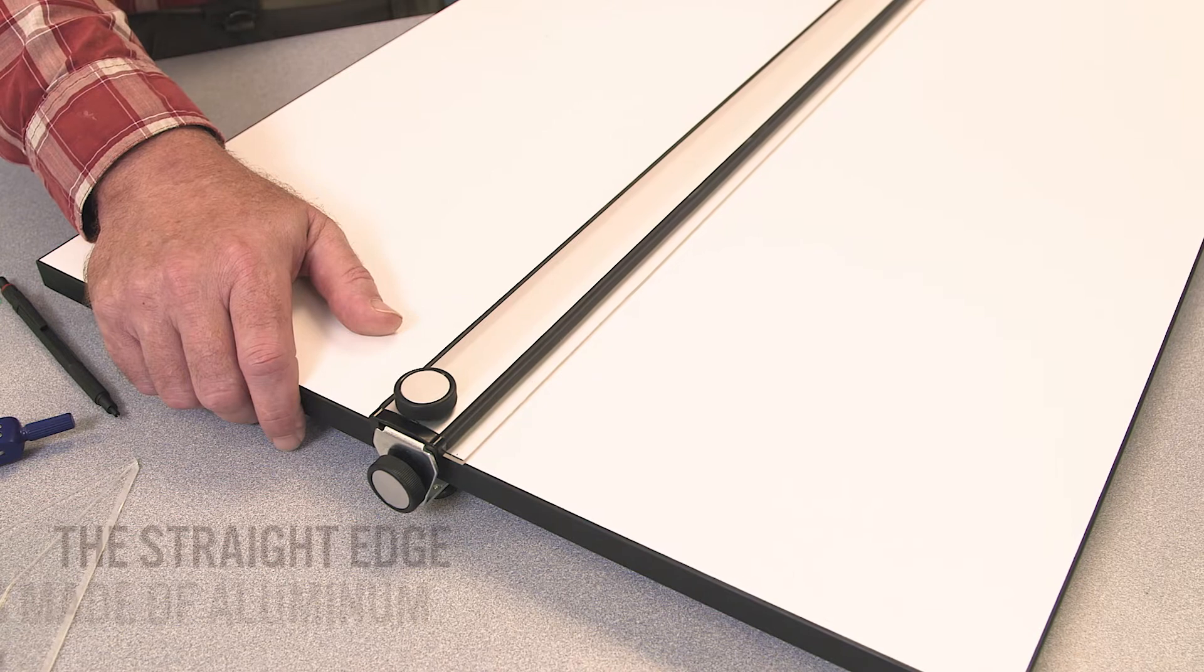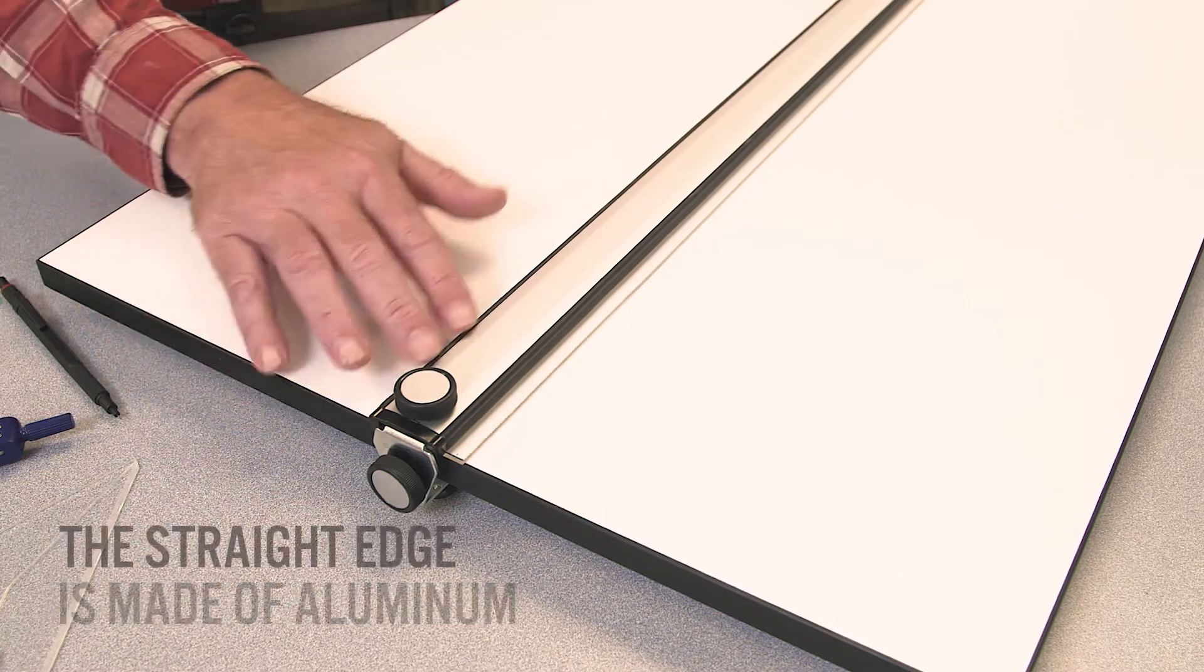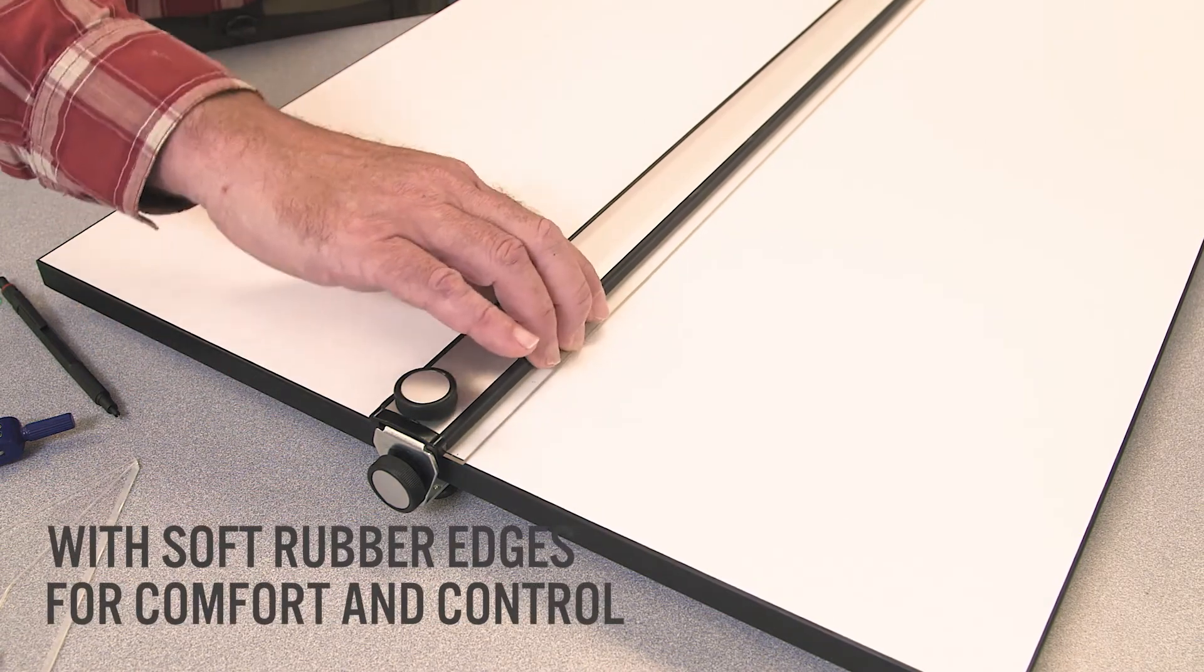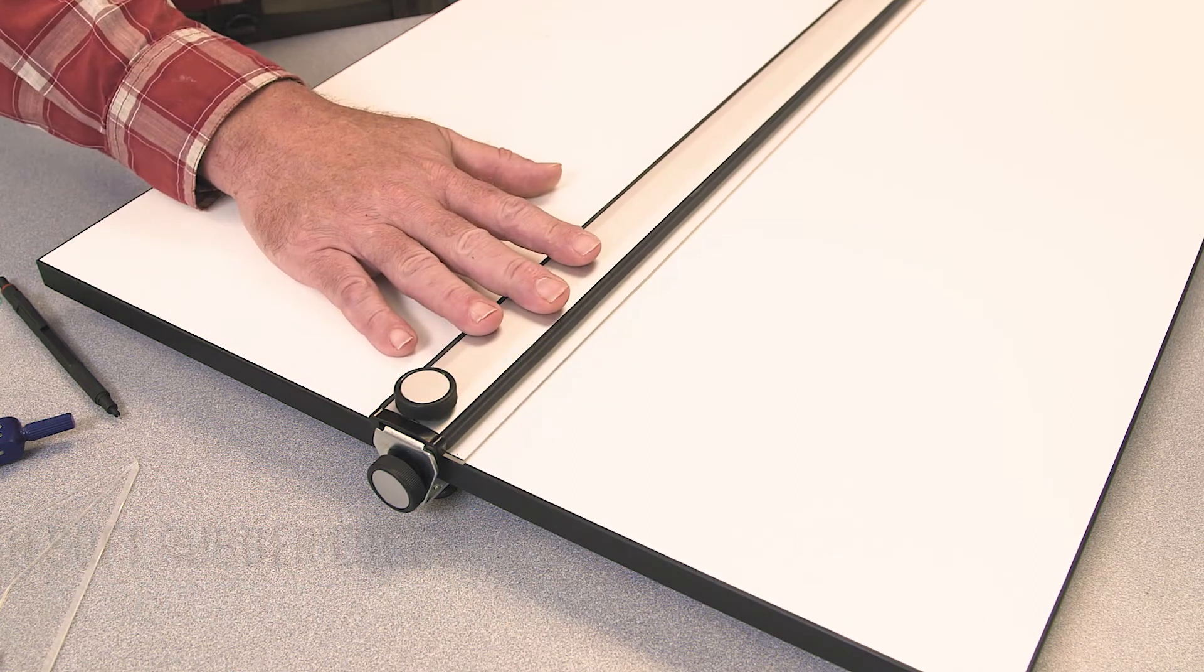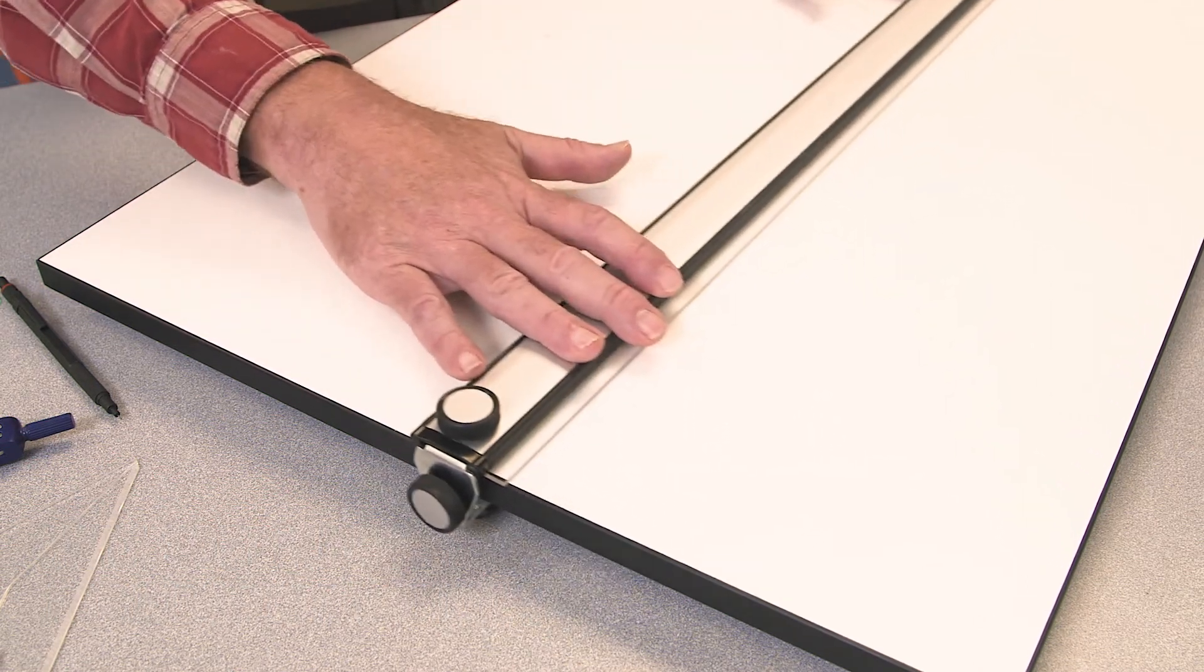The straight edge is made of aluminum with soft rubber edges for comfort and control. It glides smoothly up and down the board.